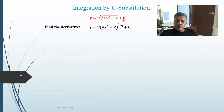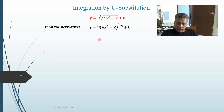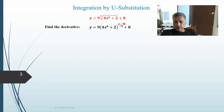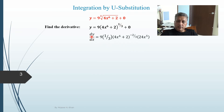Let's do one more example. We have a function that is a cube root — a cube root function. I'm going to rewrite it as a power function: when you have a cube root you can write it with a power of one third. Now we are in the form where we can take the derivative using the power rule and chain rule. One third times the coefficient nine gives three, and subtracting one from the power of one third gives minus two thirds — that's a tricky point, so be careful.